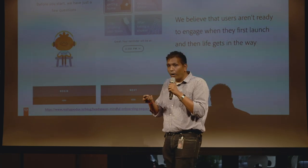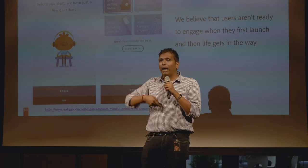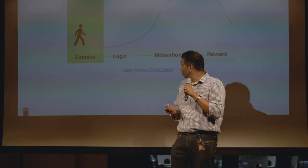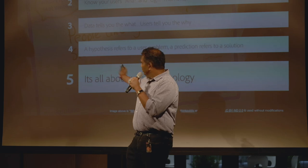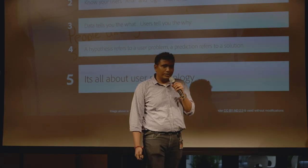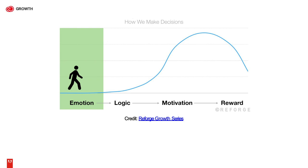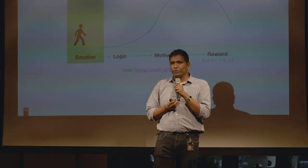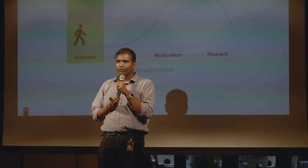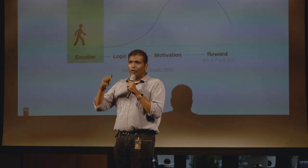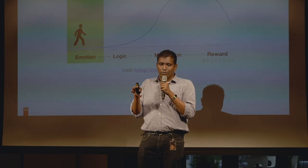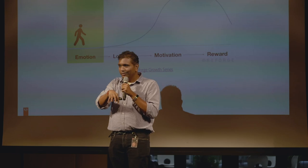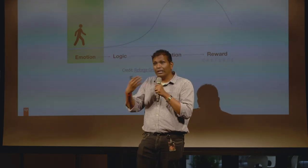If you have the right hypothesis, you can design the right test and you will have the impact you're looking for. This brings me to the next learning: it's all about user psychology. My favorite way to think about this is the Eleanor framework from Reforge. Everybody makes decisions in an emotional fashion — it doesn't matter if you think you're the most rational person in the world. Emotion drives your decisions, and the logic is basically trying to convince you that the emotion you just had is the right one. You're rationalizing the decisions your emotion has already made.